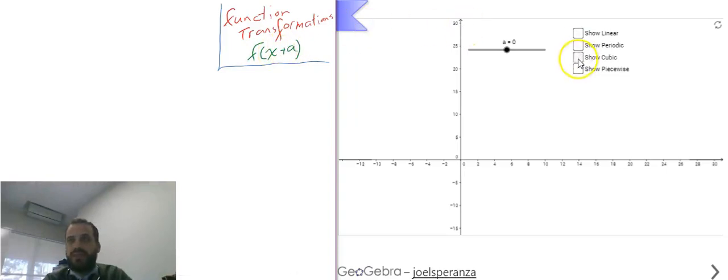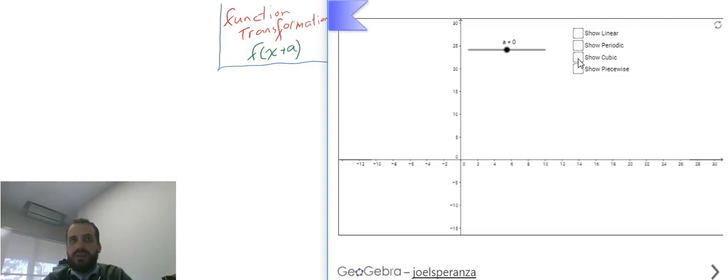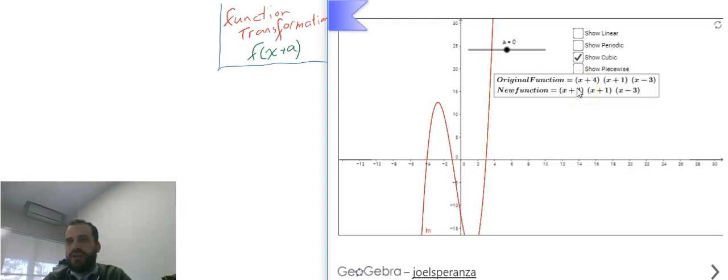So let me give you an example here which will show that. Here's a really complicated cubic function: x plus 4, x plus 1, x minus 3 multiplied together. That gives us our cubic. You haven't seen it before, but that's okay, it doesn't matter.